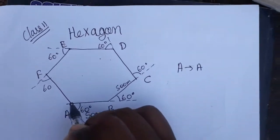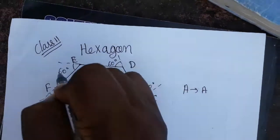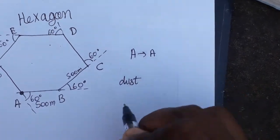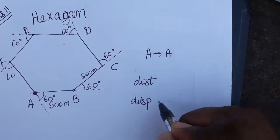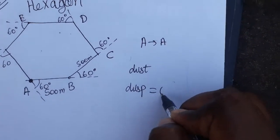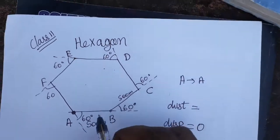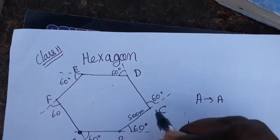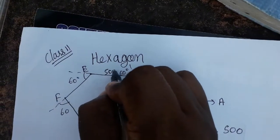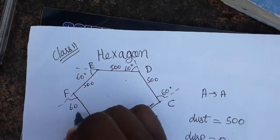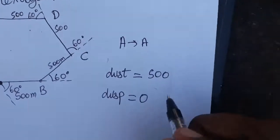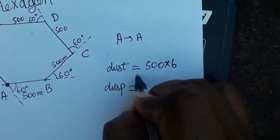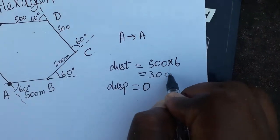The object went from A through B, C, D, E, F and came back to A. So what is the distance and what is the displacement? Displacement is zero, since start and end points are the same. Distance is 500 times 6, which equals 3000 meters.